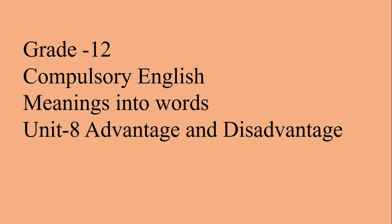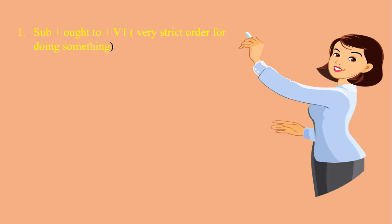The first structure is subject + ought to + V1. It means a very strict order for doing something — in simple terms, it means 'it should be done.' We read the questions, identify which structure to use, and if we find there is some strict order to do something, or a particular thing must be done, then we use the first structure: subject + ought to + V1.